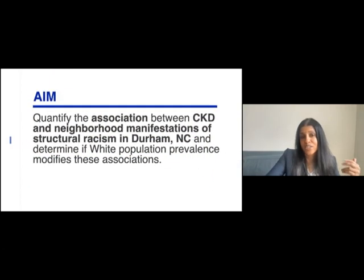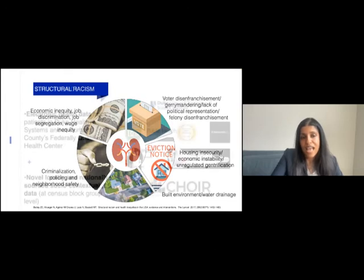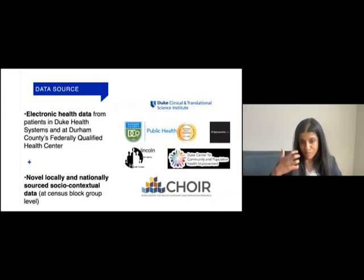We tried to understand the association between chronic kidney disease and manifestations of structural racism in Durham, looking at voting patterns, eviction patterns, built environment, and policing. We used data from Duke Health System and our federally qualified health center to understand neighborhood by neighborhood chronic kidney disease prevalence and linked that to socio-contextual data.